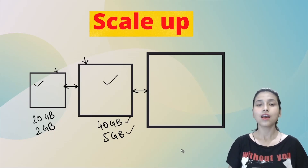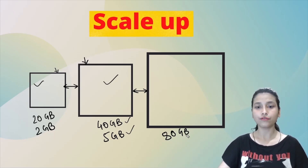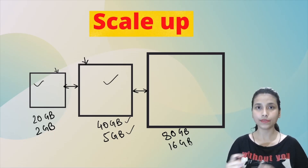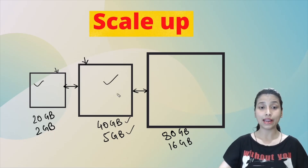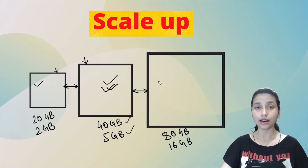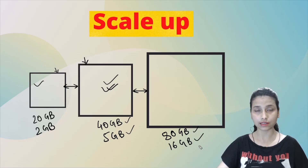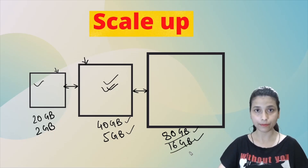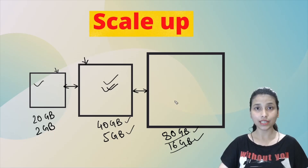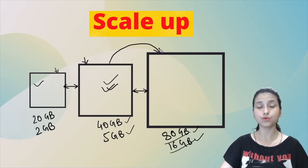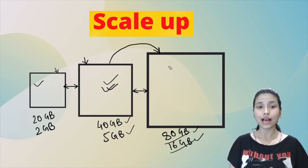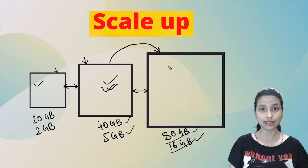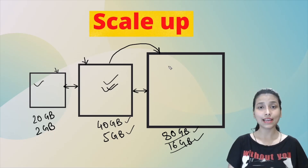Now suppose my requirement has changed again — I need a system with 80 GB of disk size and 16 GB of RAM. I won't be able to manage with the current system, so I need to configure yet another new system with that specification. I'll again transfer all my data from the second system to the third system.